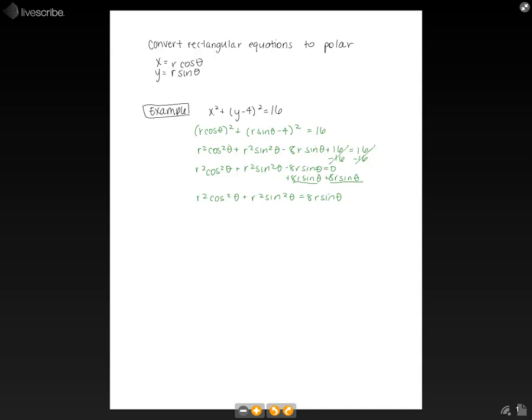So now if we see on our left side, we have an r squared common for both of the terms. So let's factor that out. So then we're left with cosine squared theta plus sine squared theta in the parentheses.